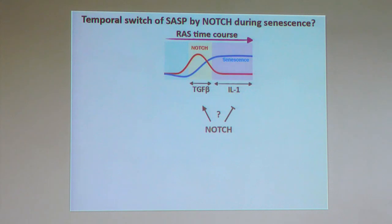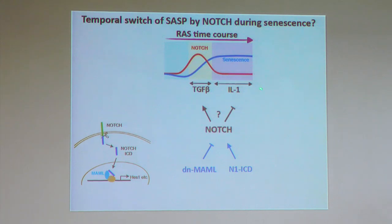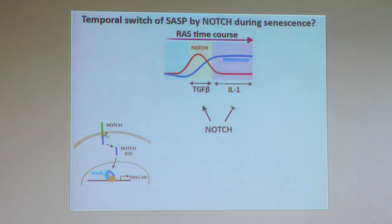The simple question we asked is whether NOTCH is involved in this switch. The tool we used is dominant negative mastermind — mastermind is a co-activator — so using dominant negative mastermind, you can genetically block downstream NOTCH activity. Using an inducible system, we can either inhibit NOTCH at an early point or activate/restore NOTCH activity later. The message is: if you block NOTCH activity in the early phase, TGF-beta upregulation is inhibited and IL-1 comes up. If you restore NOTCH, TGF-beta stays high and IL-1 is gone.